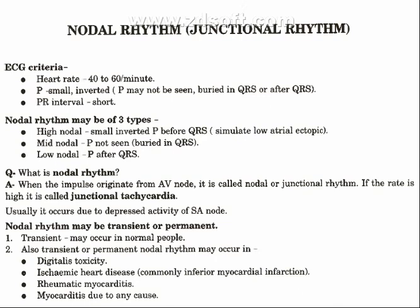What is nodal rhythm? When the impulse originates from the AV node, it is called nodal or junctional rhythm. If the rate is high, it is called junctional tachycardia. Usually it occurs due to depressed activity of the SA node.